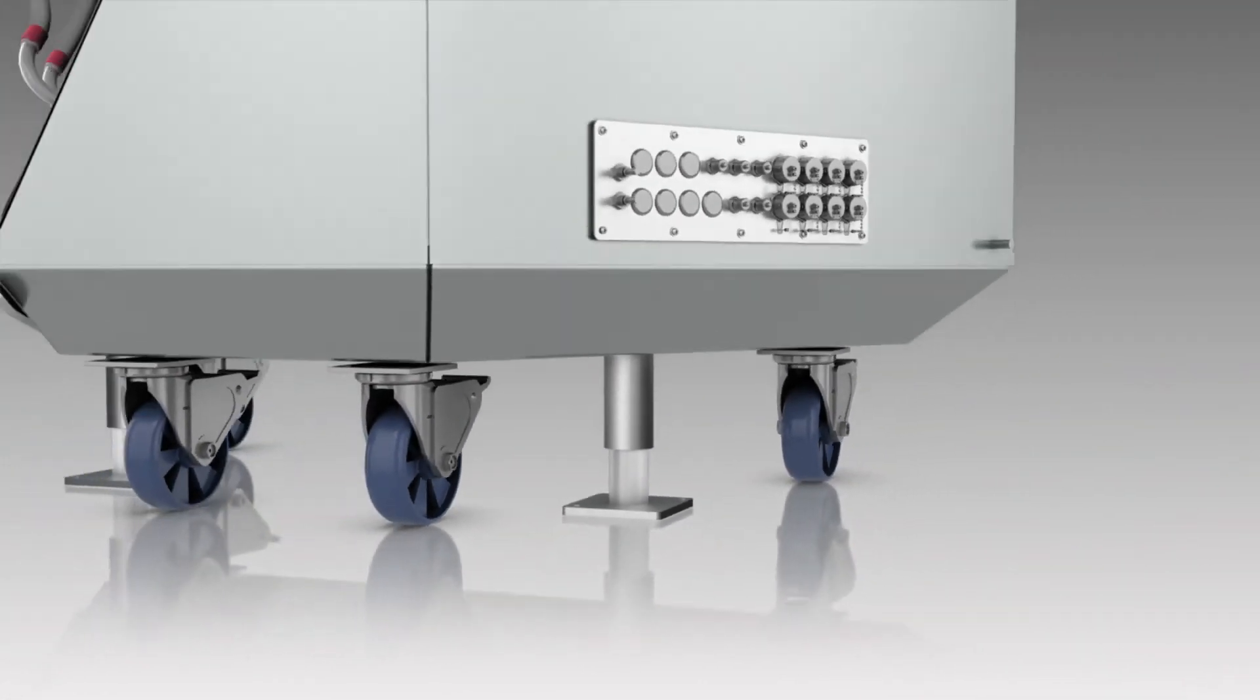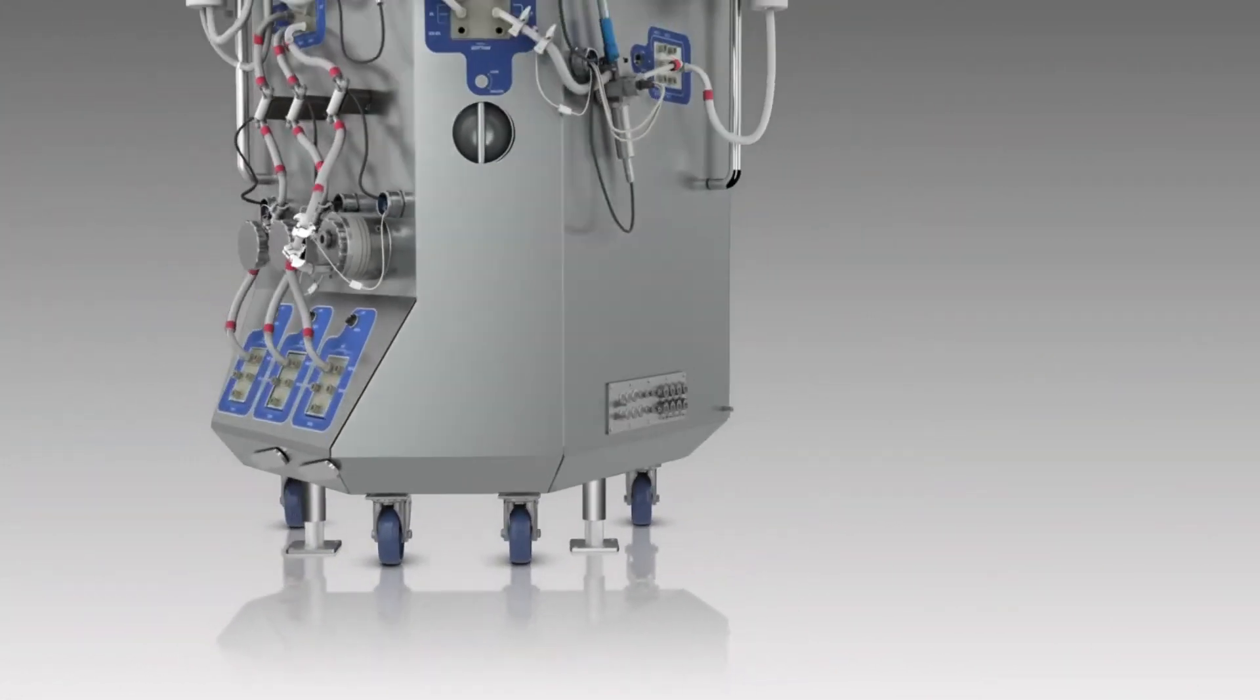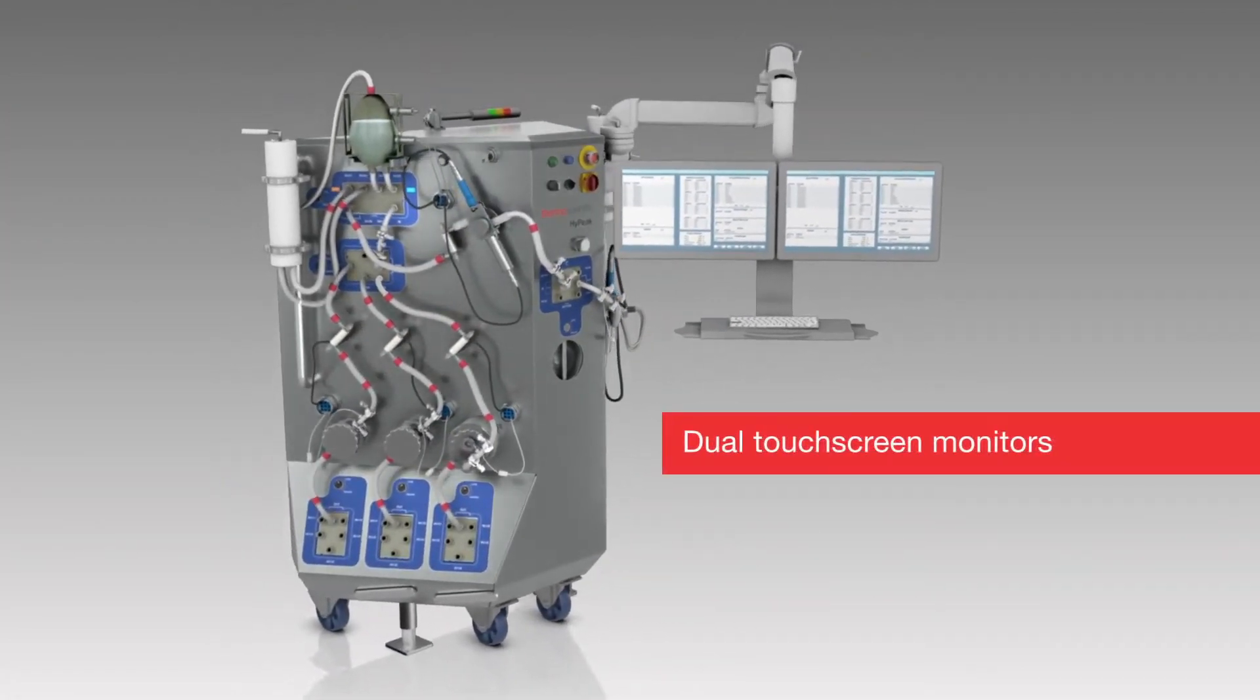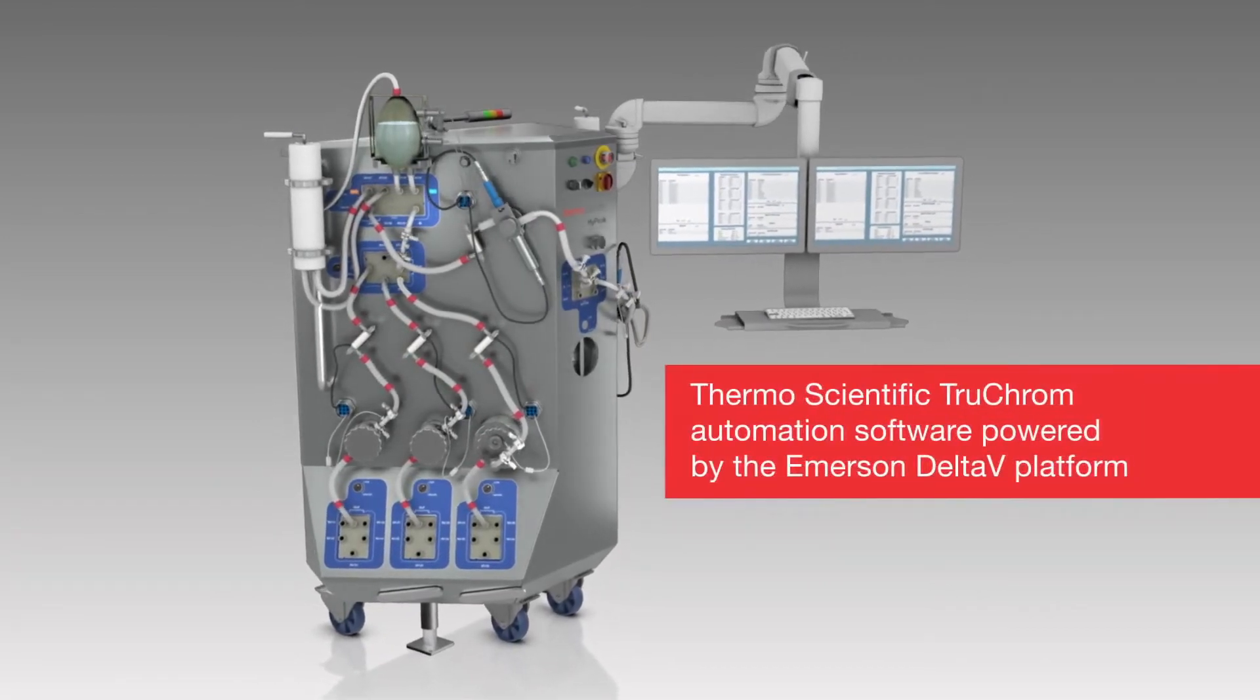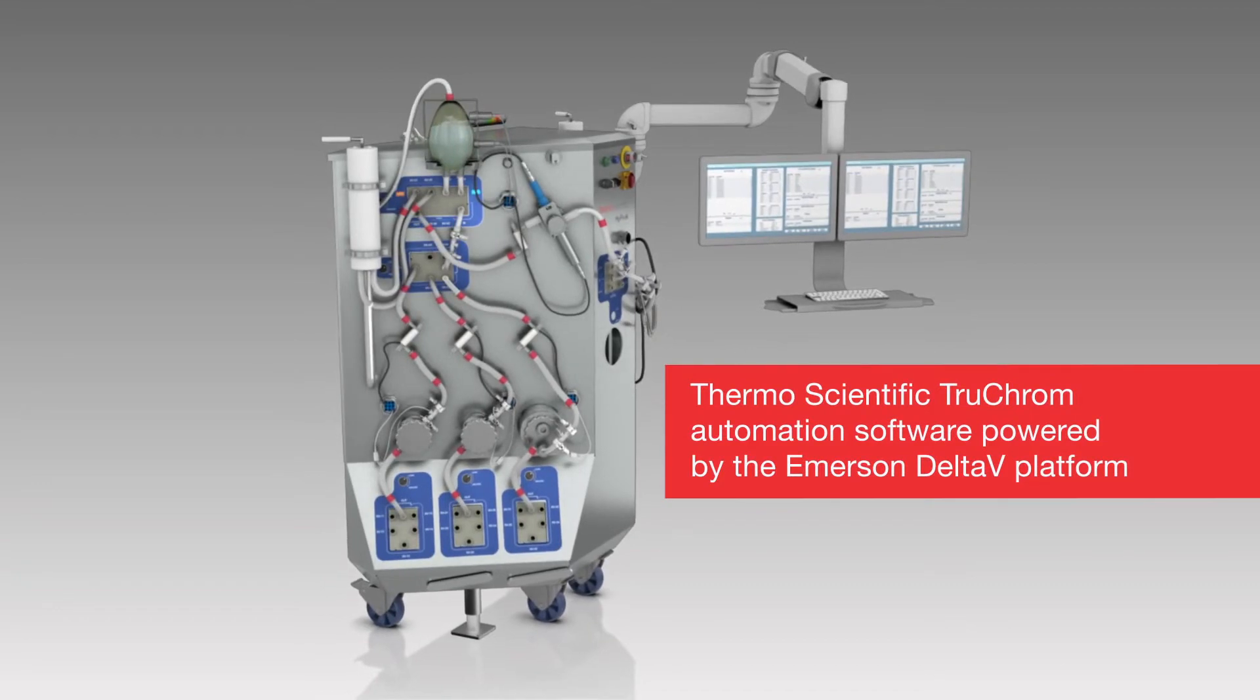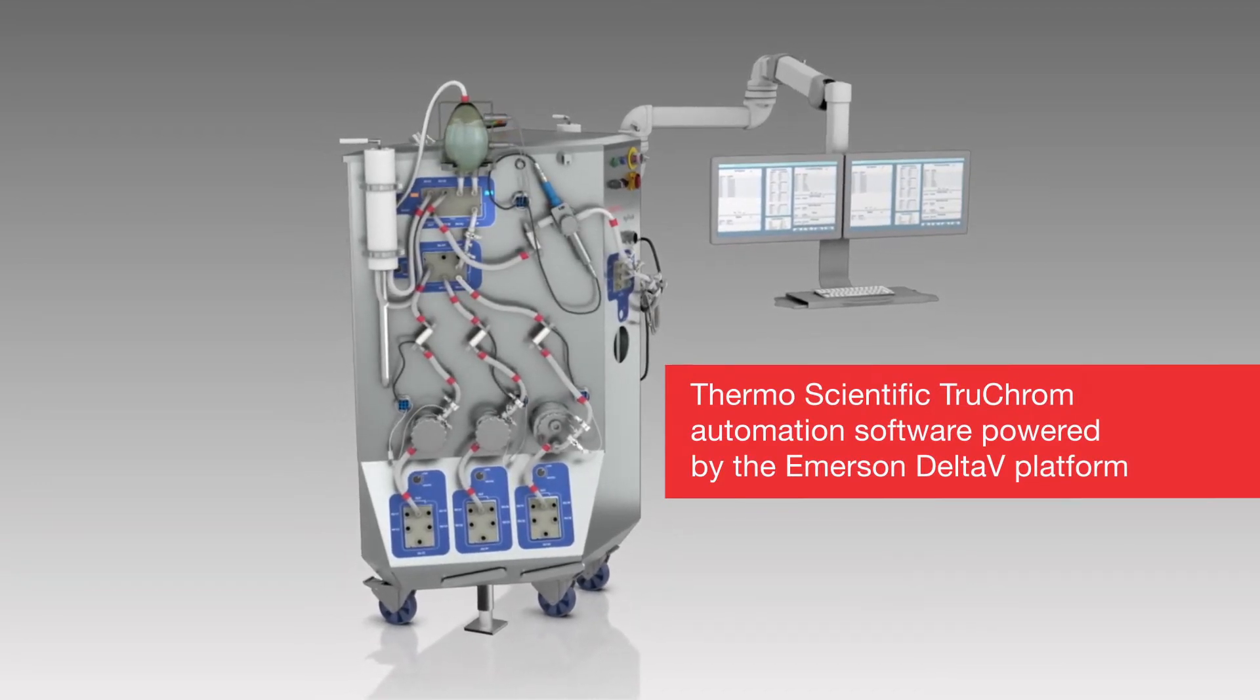The High Peak Chromatography System provides dual-touch screen monitors, ideal for viewing batch and continuous operations simultaneously. The system offers Thermoscientific TrueChrome automation software powered by the Delta V Distributed Control System from Emerson, an industry standard.